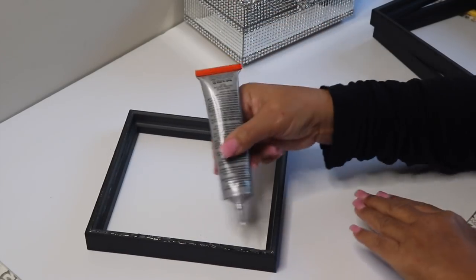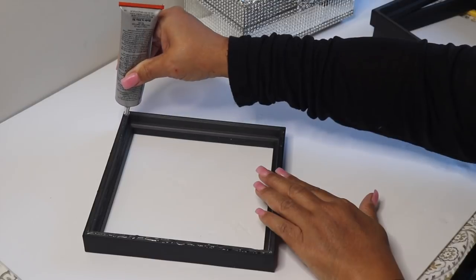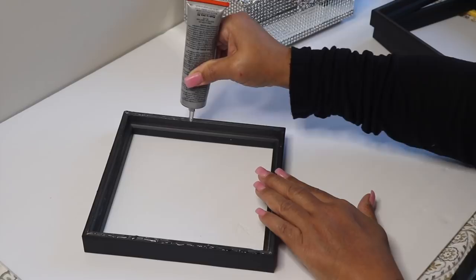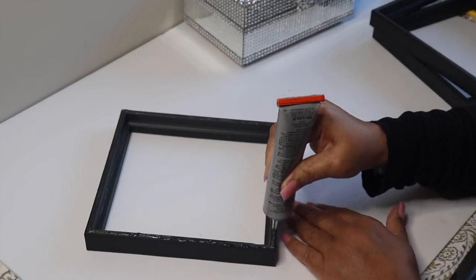Next I glued three of the frames together in the same direction. Here's where I should have added a piece of foam board at the bottom before gluing them together. You'll see how I fix that later.